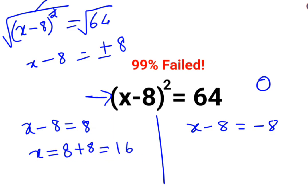So answer is 16. And here when I shift the 8 on the other side I have minus 8 plus 8. So answer is 0.